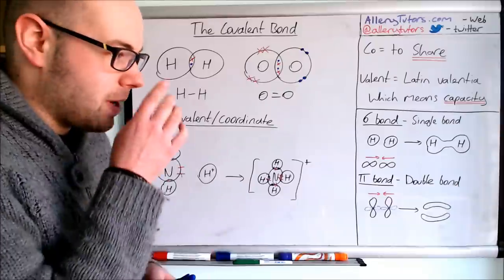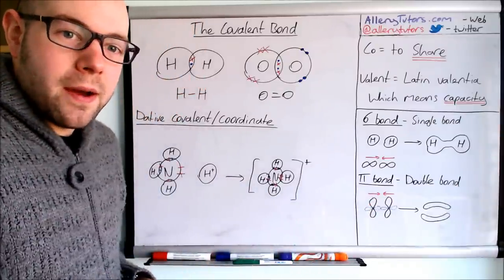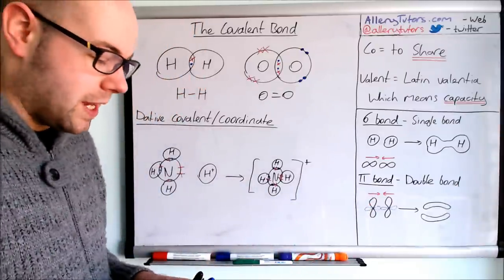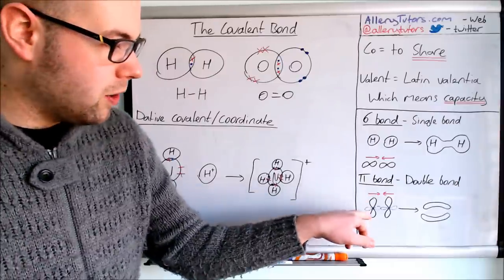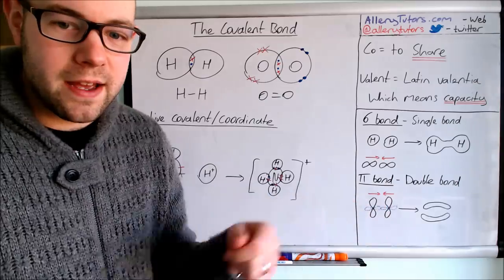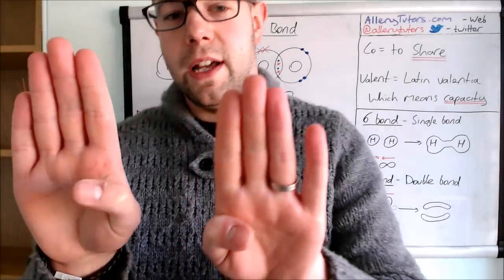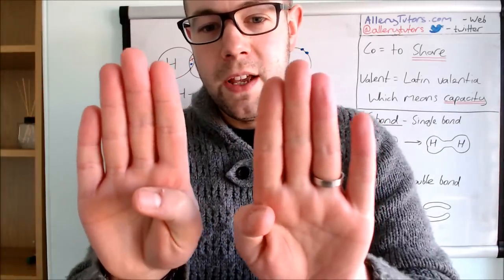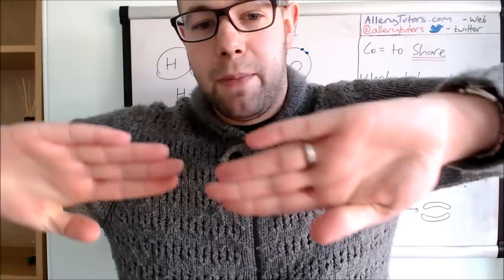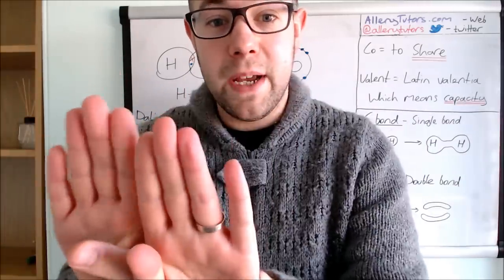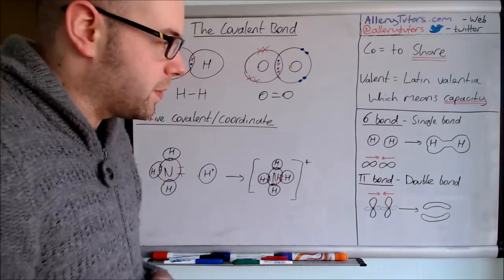A pi bond occurs when p orbitals come together side by side rather than head to head. You have the lobes of the p orbital approaching from a side view, giving a much bigger overlap compared to head-to-head. That bigger overlap effectively gives the extra strength you would find in a double bond.